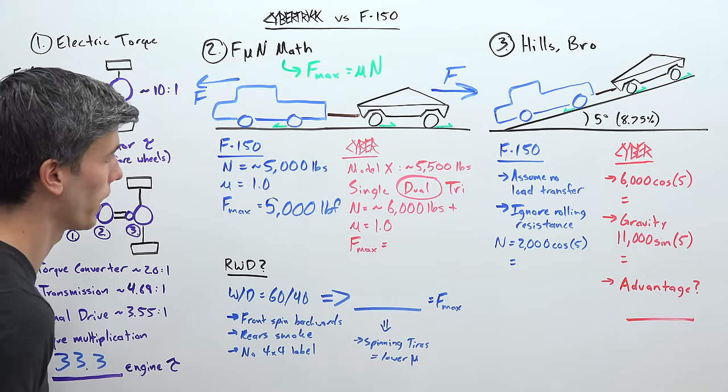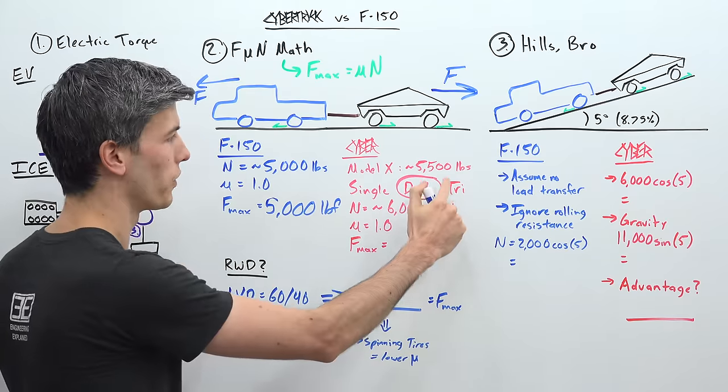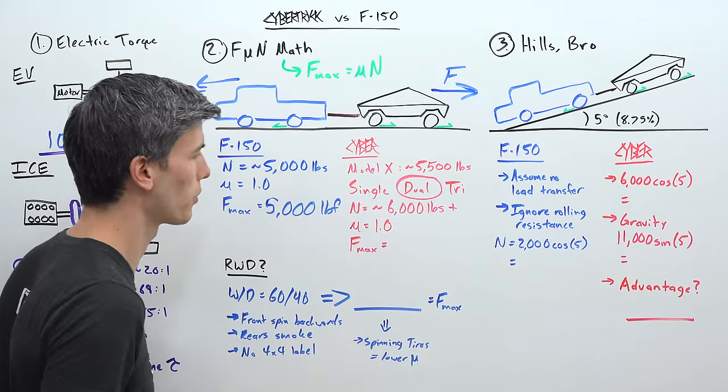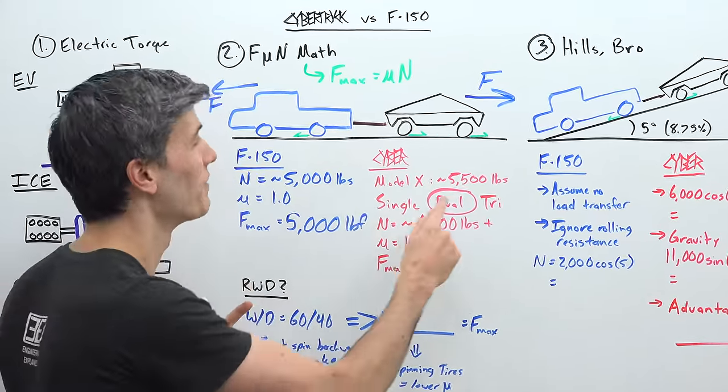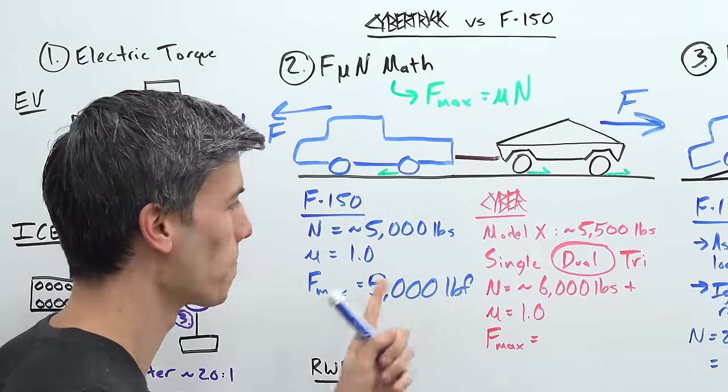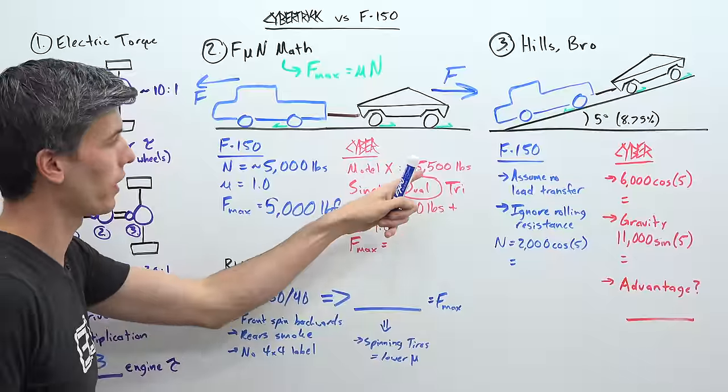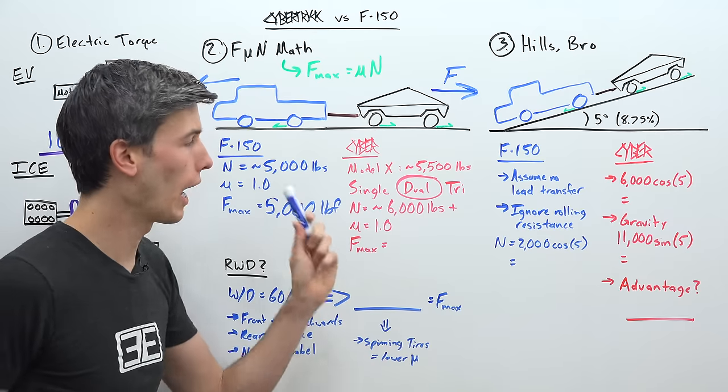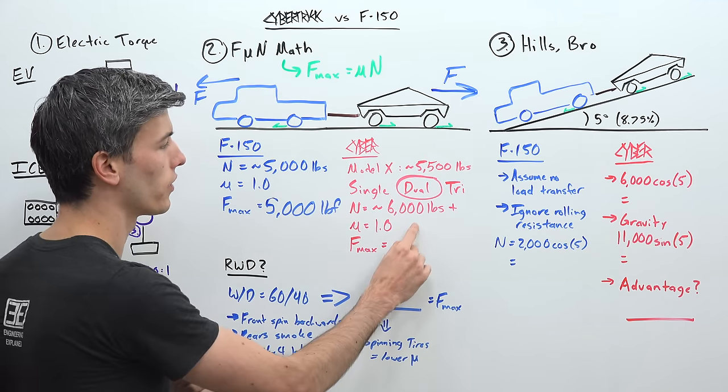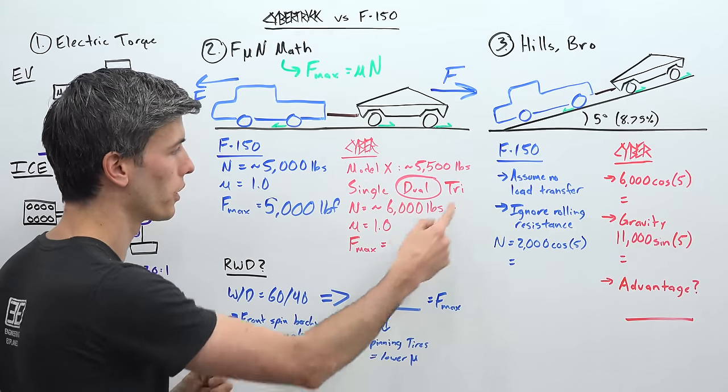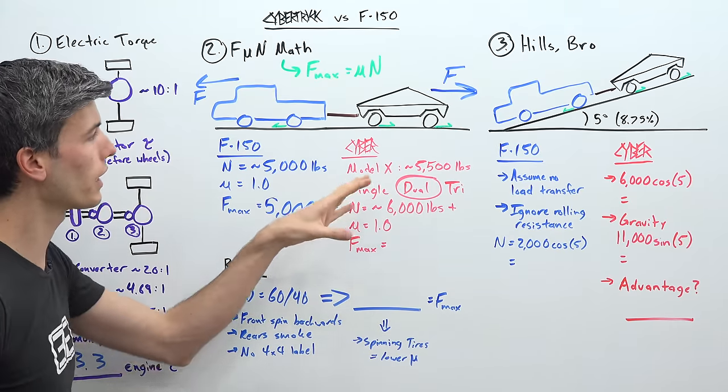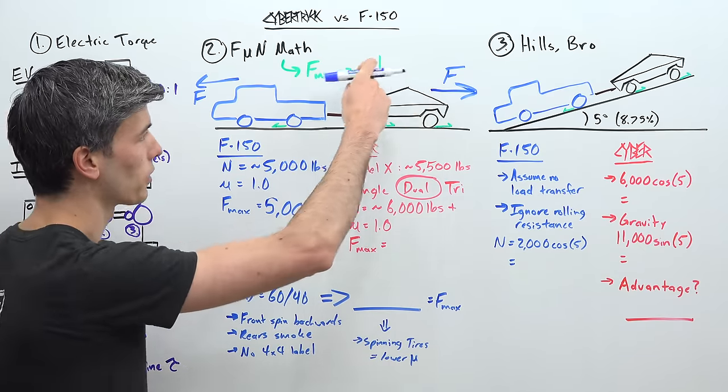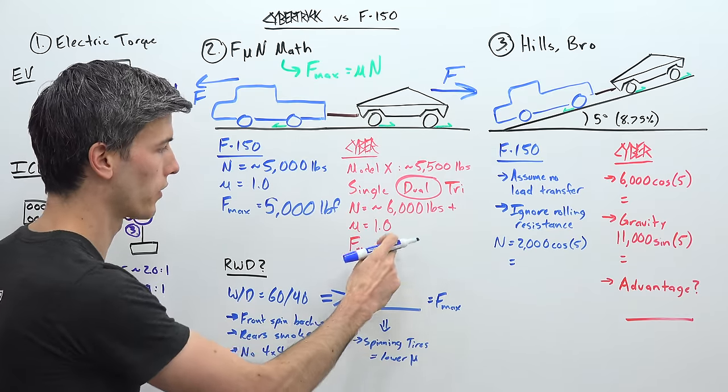Now the Tesla on the other hand, we don't know how much it weighs, but we do know that a Model X weighs 5,500 pounds, and we're going to assume that this is the dual motor out of the three options, single, dual, and tri of the Tesla Cybertruck. By the way, it's really cool that for the first time I can actually accurately draw one of the cars that I'm talking about in a video on a whiteboard. So regardless, we're assuming the Model X is about 5,500 pounds. I would say best case scenario, this truck is going to be 6,000 pounds.